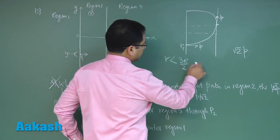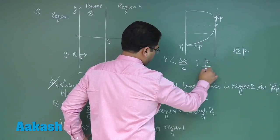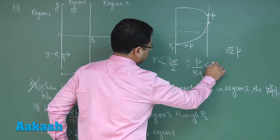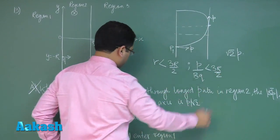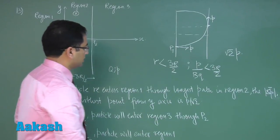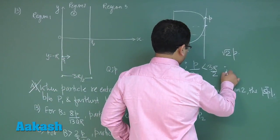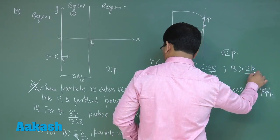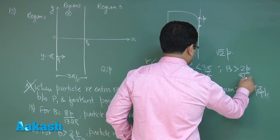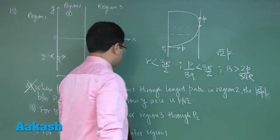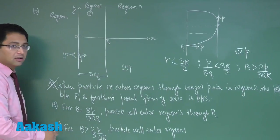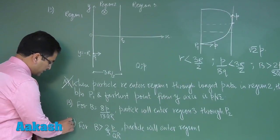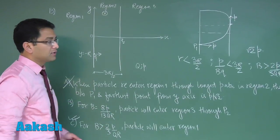And the radius is mv by bq, so p by bq is less than 3r by 2. Now here the condition comes something like this: B is greater than 2p by 3qr, and this thing is exactly matching option number c. If you can see this answer, option number c would be correct.